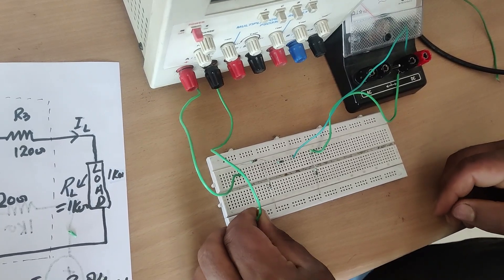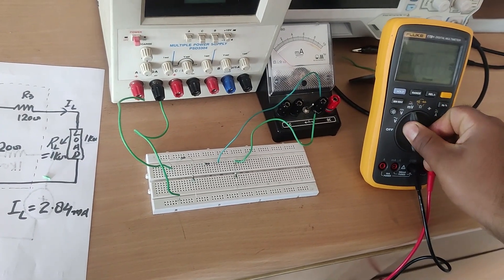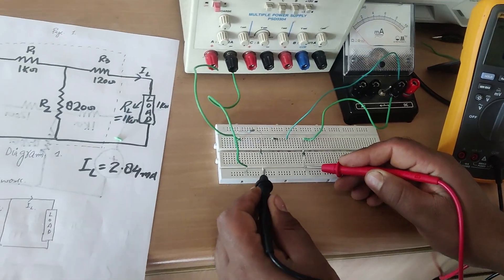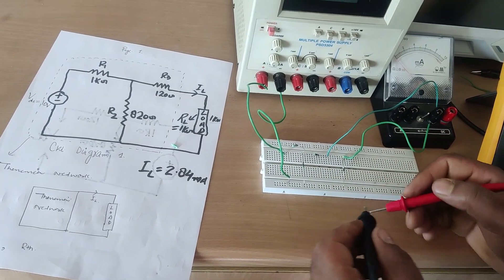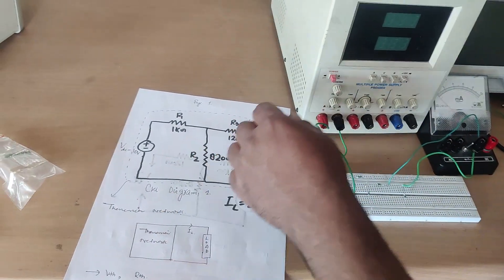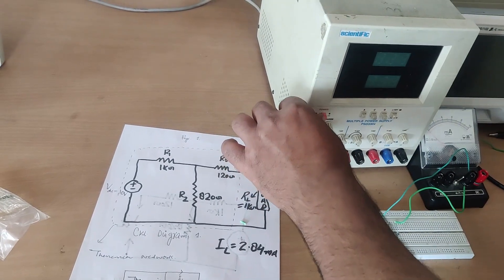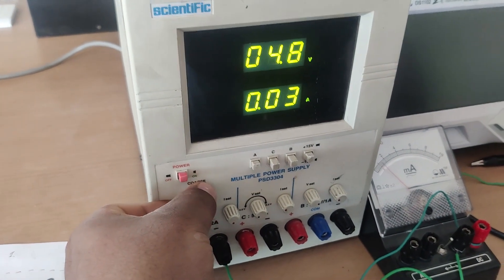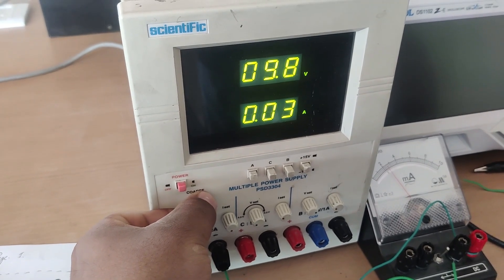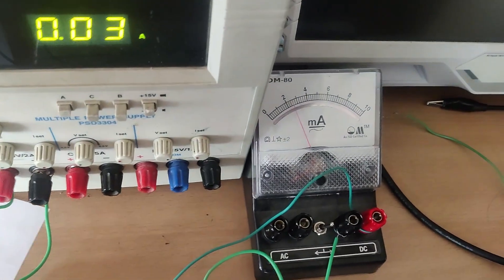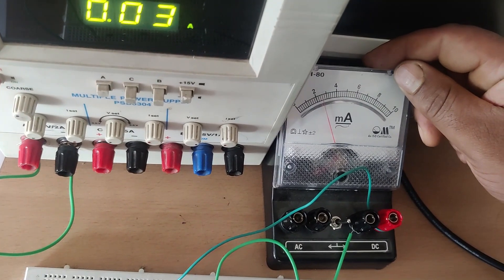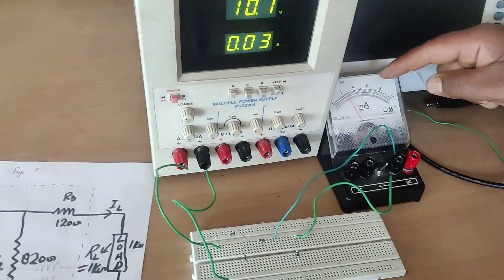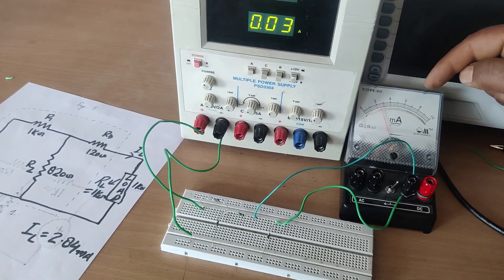First I will check continuity using the multimeter in continuity mode. You can see the beep is appearing, which means this connection is at a common node — they are connected. Now let us set VDC to 10 volts. The voltage is almost 10 volts and the current is almost equivalent to 2.84 milliamps, which we had calculated. The load current shown by the ammeter is 2.84 milliamps.